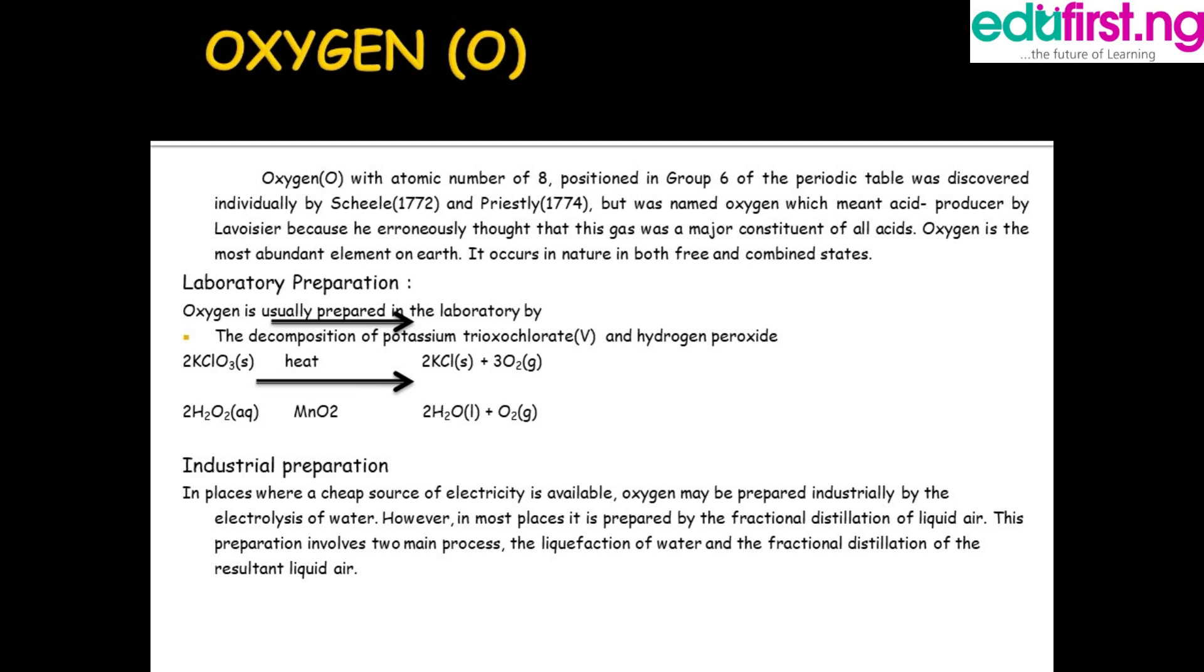Industrial preparation: How do we prepare oxygen industrially? In places where a cheap source of electricity is available, oxygen may be prepared industrially by the electrolysis of water. However, in most places it is prepared by the fractional distillation of liquid air.